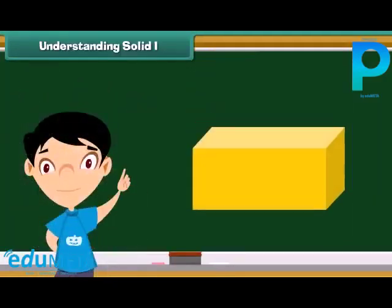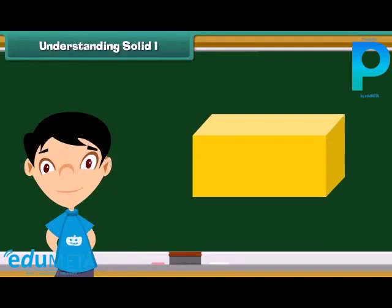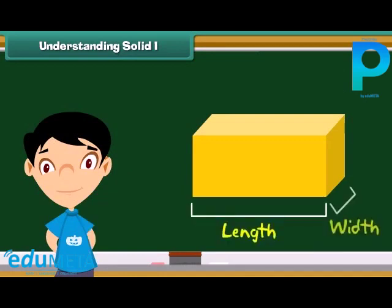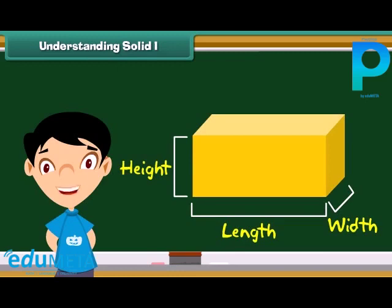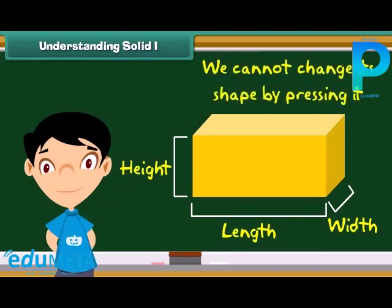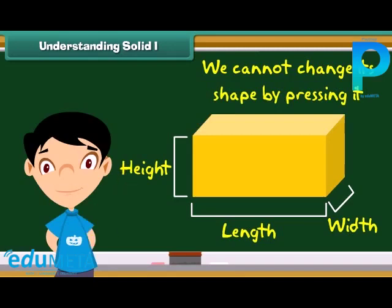Friends, look at this brick. This is a solid. This brick has a fixed shape. It has length, width and height. It is hard. We cannot change its shape by pressing it. Thus, we can say a solid has definite shape and size and cannot be pressed easily.